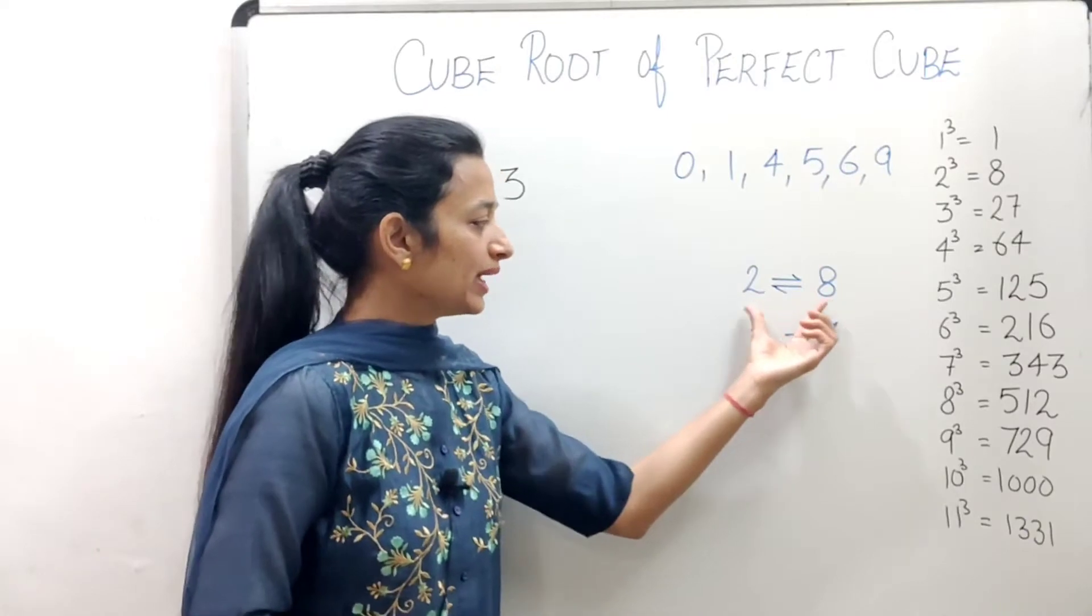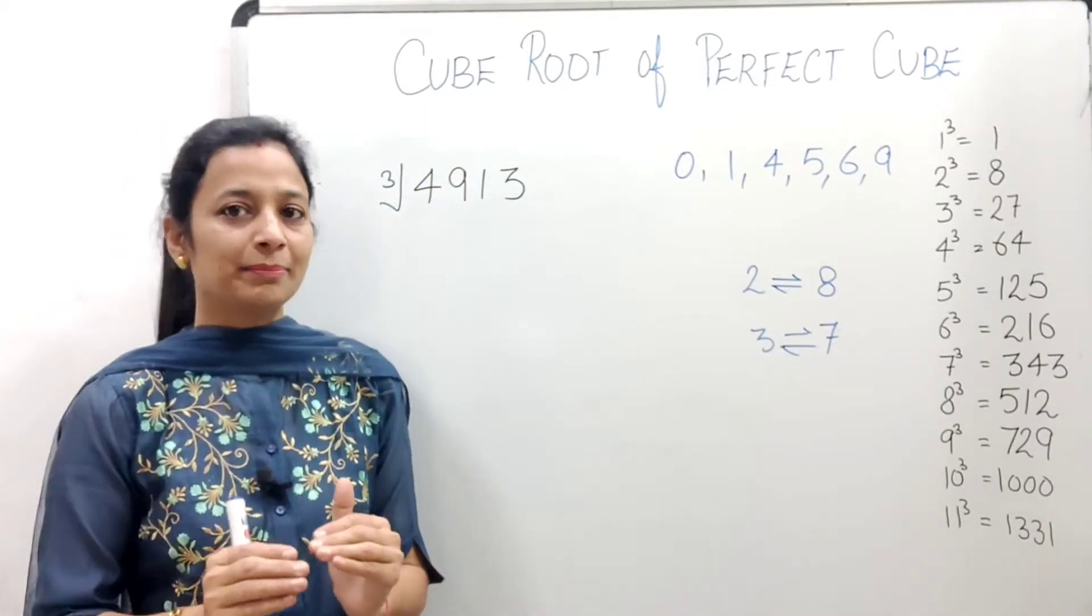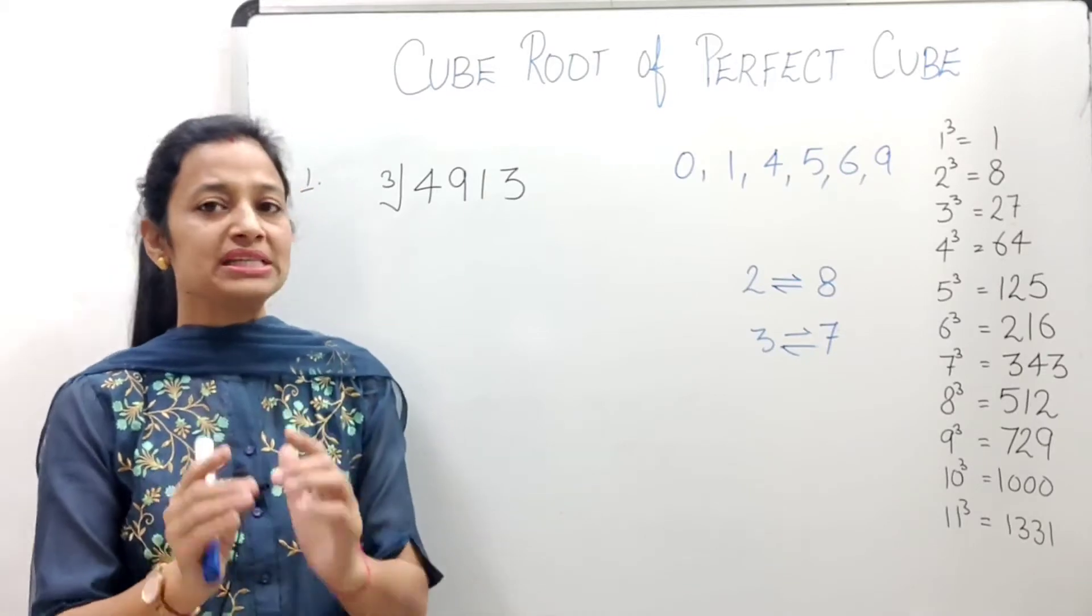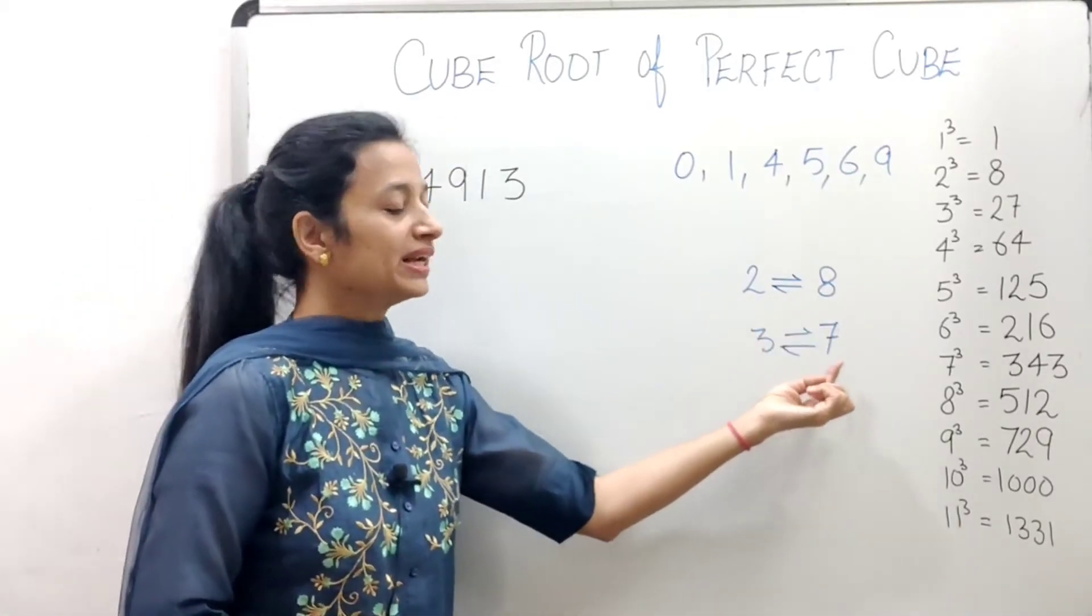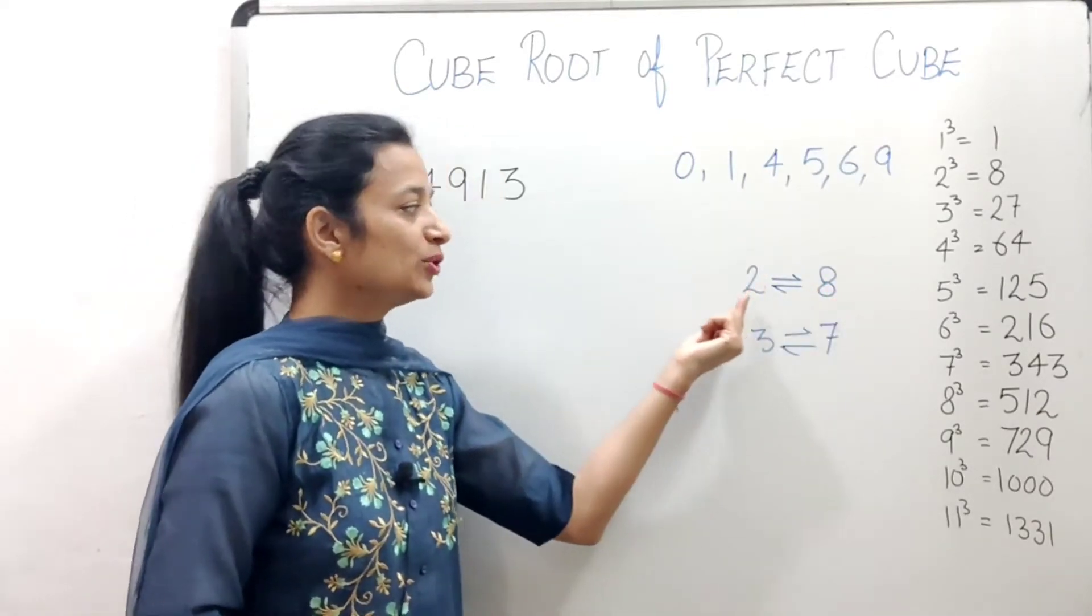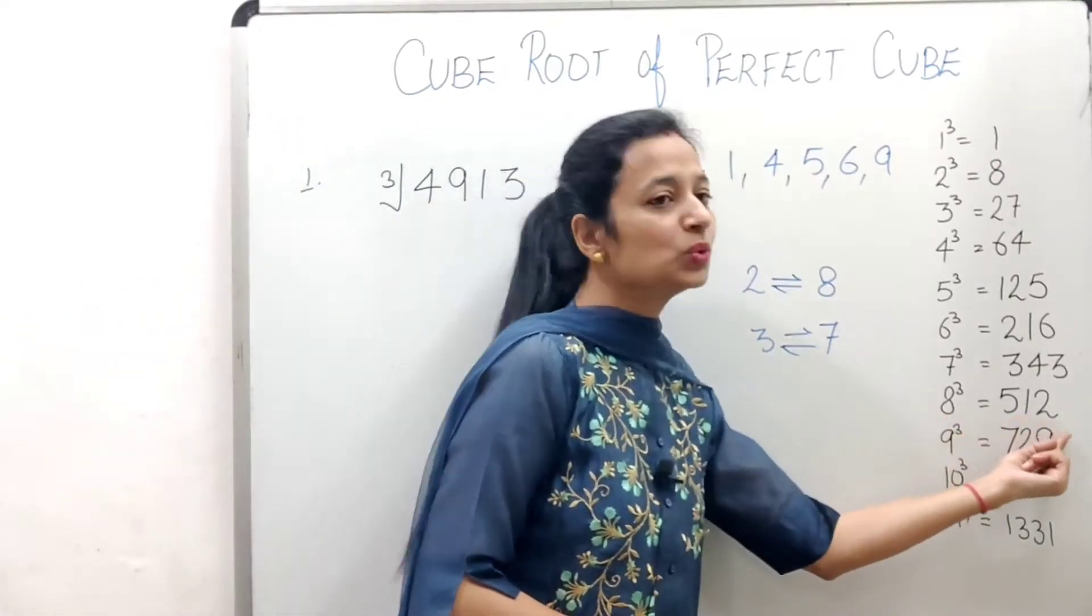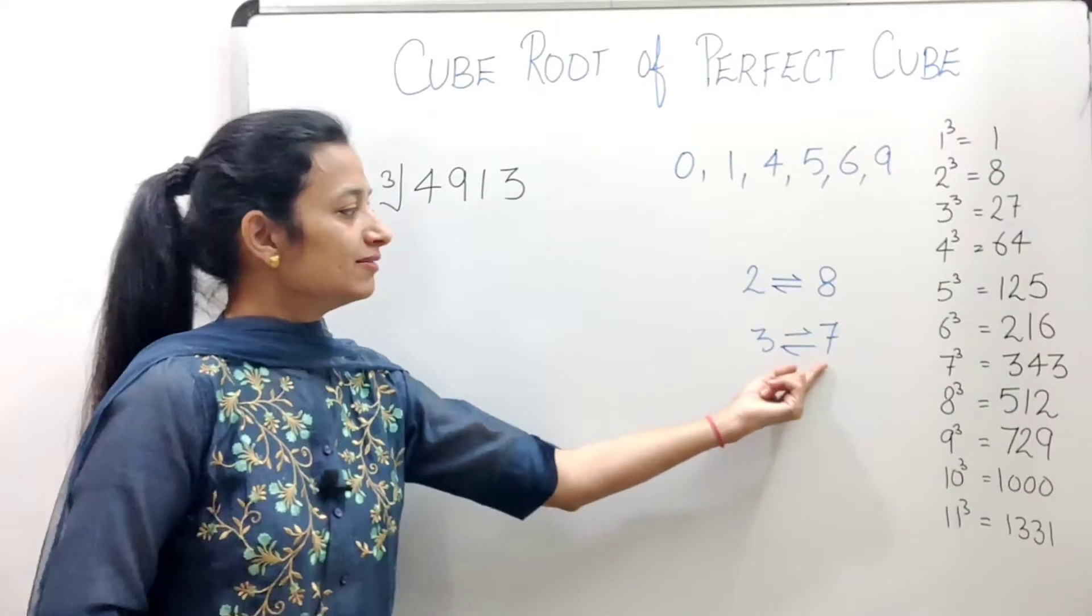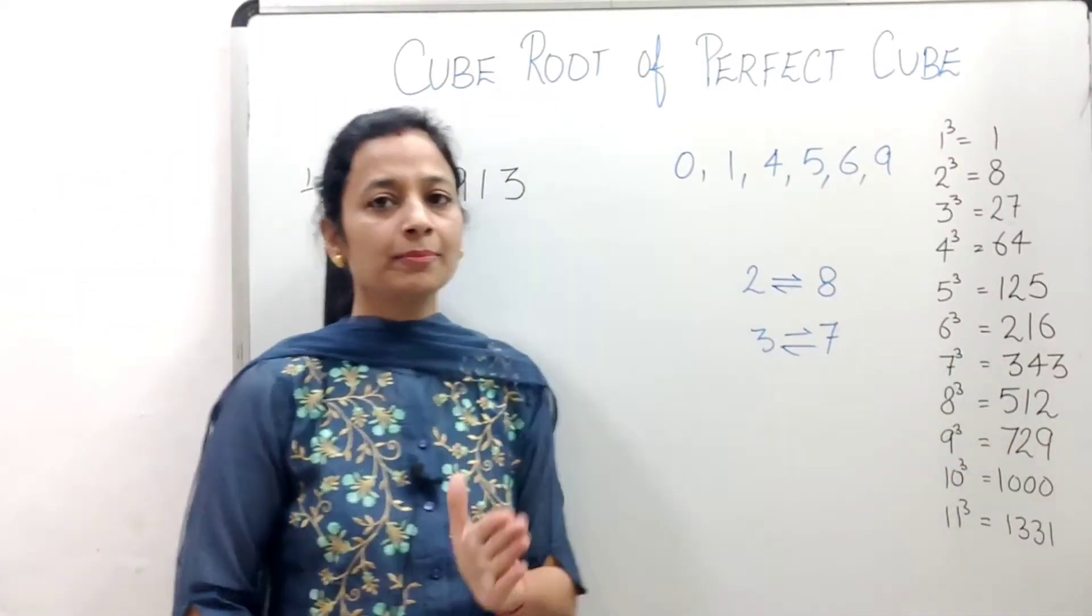And 2, 8, 3, 7 are digits where when we cube them, the number changes. For example, 2 cubed gives us 8, and 3 cubed gives us 27, so the unit digit is 7. This is reciprocal.